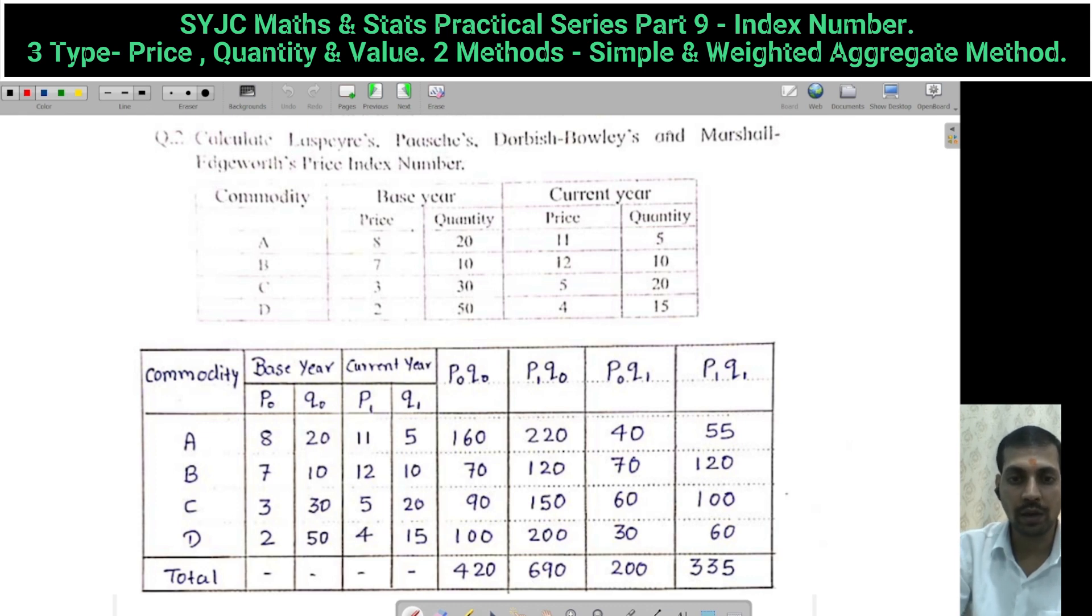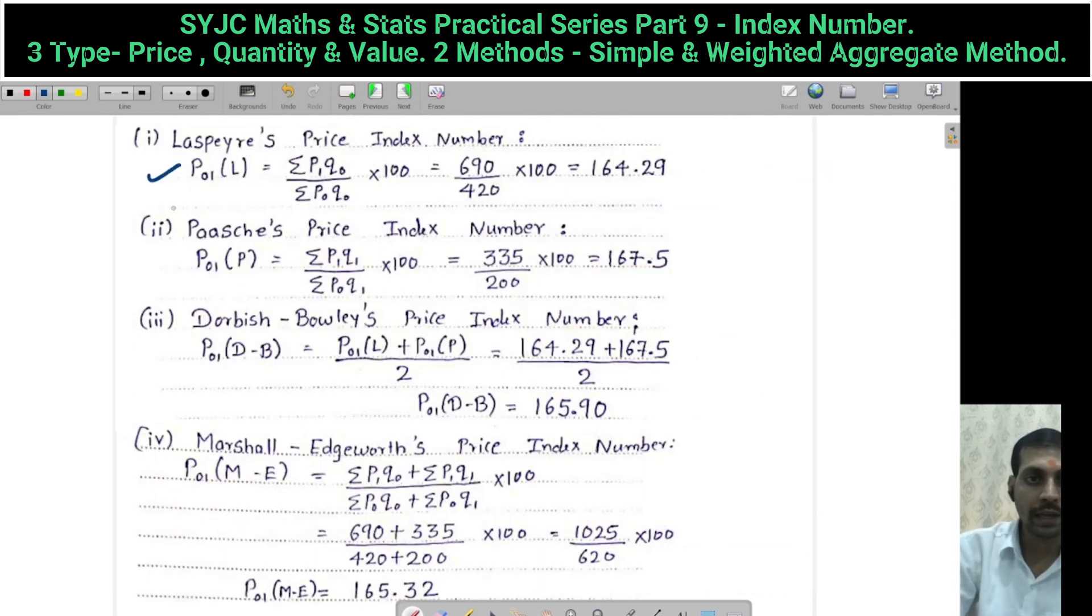DB and Marshall calculations. Look how you remember: P0Q0, P1Q0, P0Q1, P1Q1. Calculate all the values and totals. After, the formulas are Laspeyres, DB, and MB - these are value formulas. You have final answers. I have done and cross-check this.